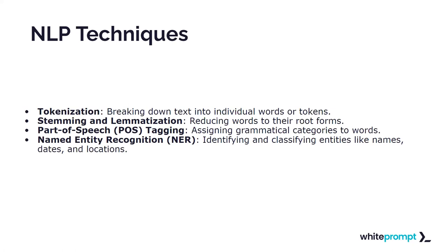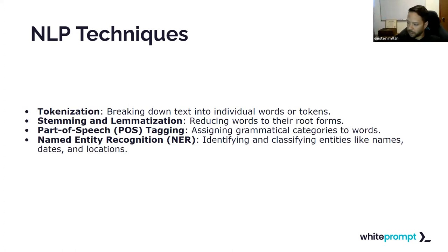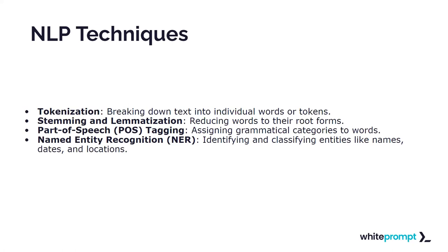We'll likely reach a point where computers detect sarcasm better than humans. We've seen similar cases in the medical field for detecting tumors. Recently, ChatGPT was able to predict what a person was thinking through MRI scans with a certain degree of accuracy. This can be scary, but it's also interesting.